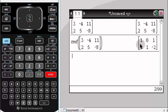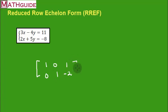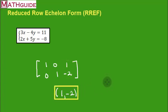The calculator gave us back a two by three matrix: 1, 0, 1 on the first row and 0, 1, negative 2 on the second. The answer is right there — the numbers in the last column, 1 and negative 2, give us our solution. The 1 is the X value and the negative 2 is the Y value. So the solution is the ordered pair (1, negative 2). It's just that easy.